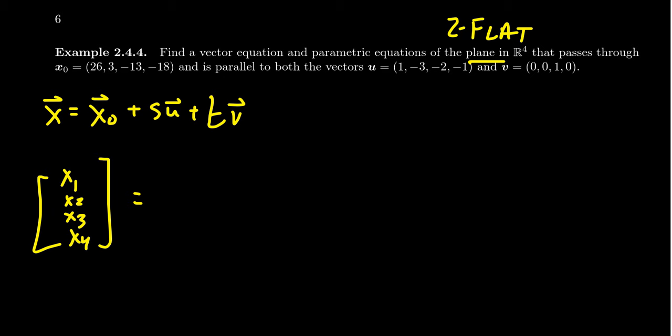X0 is given by the vector (26, 3, -13, -18). And then we take the span of our two spanners, because our plane is parallel to them.